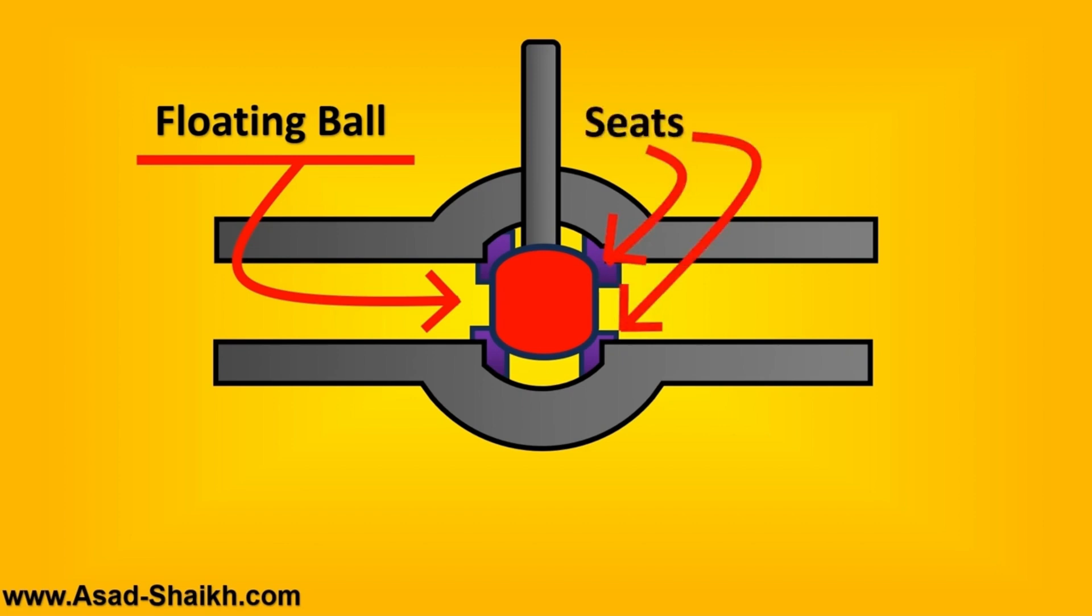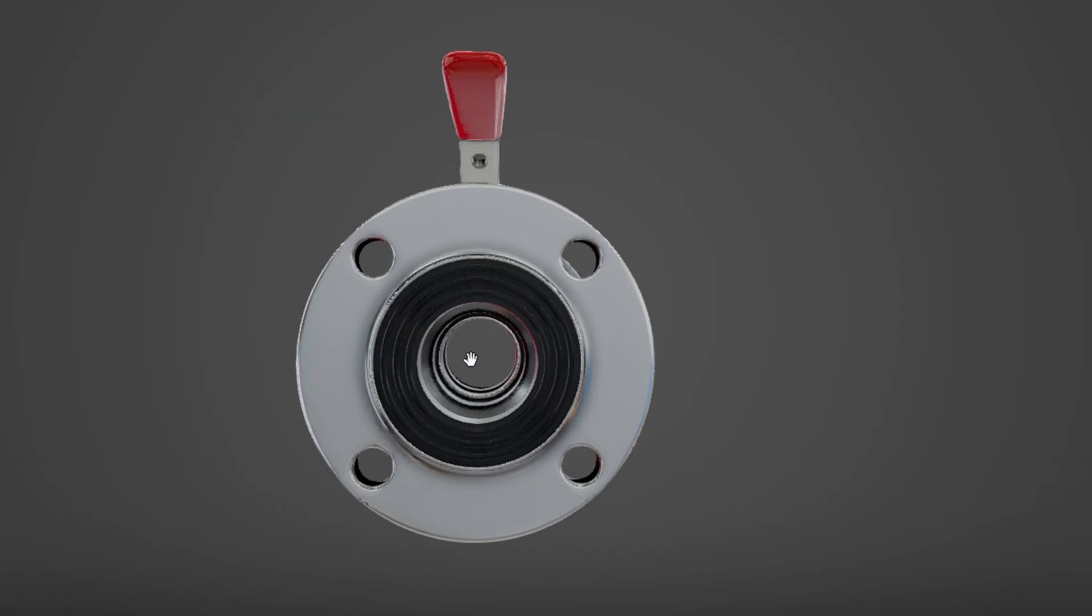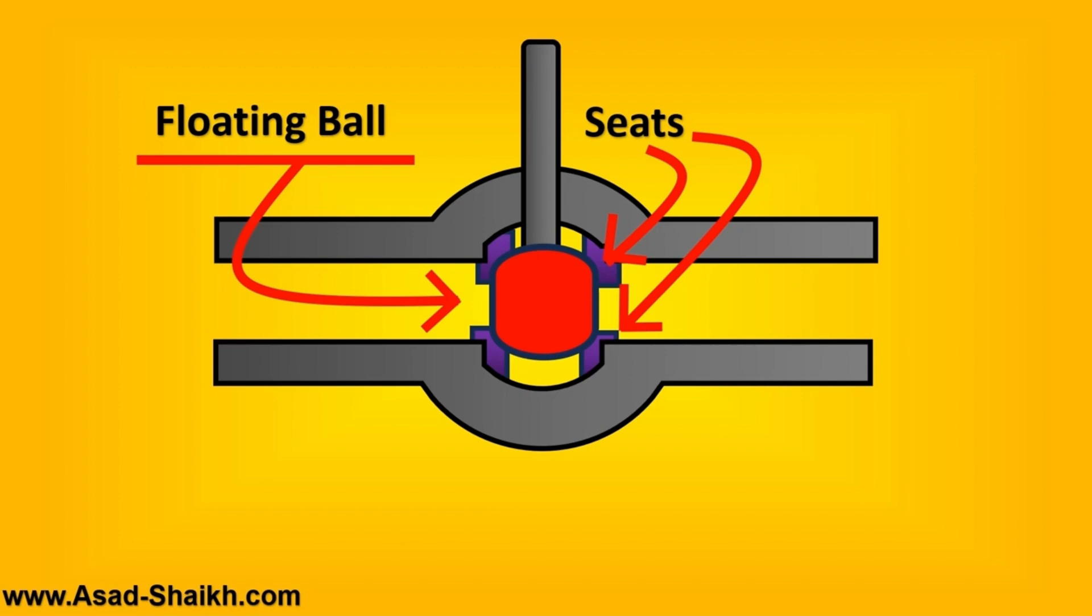Basically, as the fluid is passing, the ball is going to rotate. In order to keep it in position, the seat is going to act, or these elastomers are going to act to keep it in the right position.